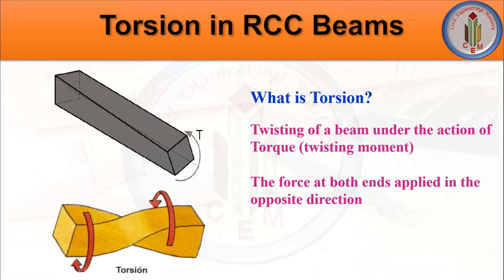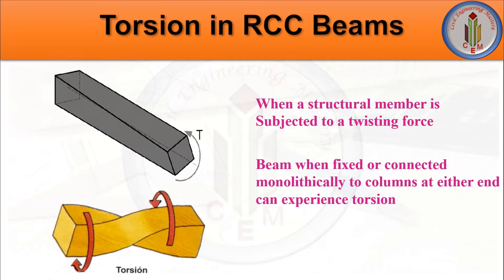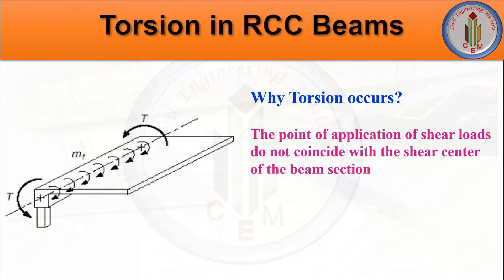This torsion force may be induced in an RCC concrete member in various ways during the process of load transfer in a structural system. Torsion develops in a structural member when it is subjected to a twisting force. Beams fixed or connected monolithically to a column at either end can experience torsion.